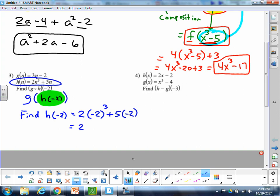And h of negative 2 says it's 2 times negative 2 cubed plus 5 times negative 2. So we need to evaluate that. So we really have 2 times, if you do negative 2 cubed, so negative 2 times negative 2 times negative 2, that's going to be negative 8. And then we're adding 5 times negative 2, which is negative 10. So we really have a plus negative 10 or a minus 10.